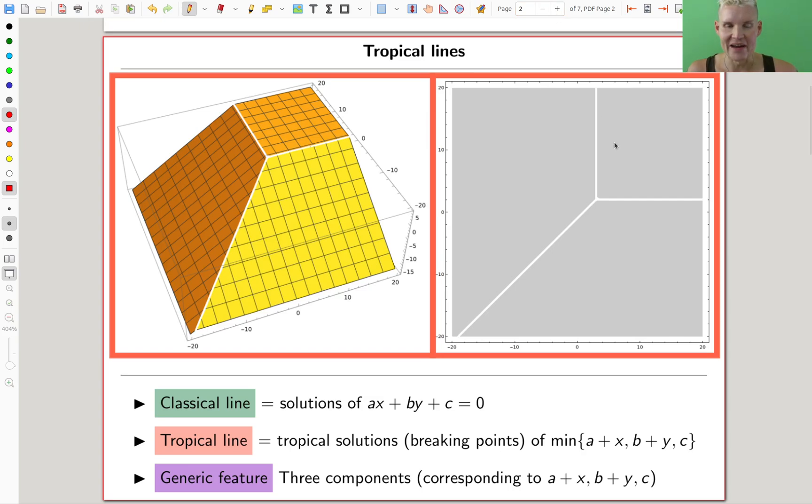Okay, tropical line, let's start with a tropical line. So classical line: AX plus BY plus C equals zero. Hopefully everyone here has seen a classical line. And then you apply the tropicalization and you get this min function. So AX turns into A plus X, BY turns into B plus Y, C is just C, and then the min of all of them.